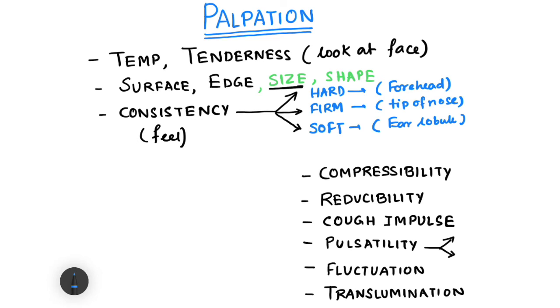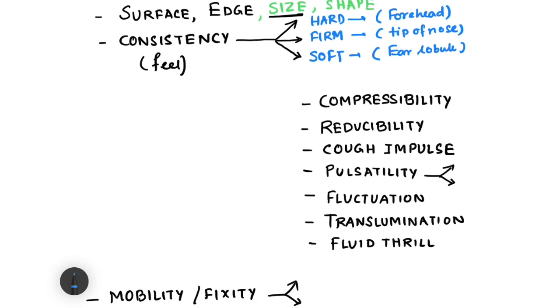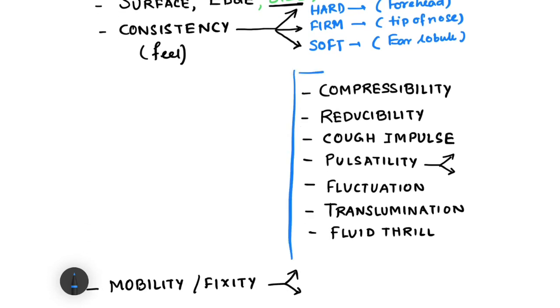Now if your lump is soft, you perform all these tests: compressibility, reducibility, cough impulse. Cough impulse at this time you feel with your hand whether there is any cough impulse or not. Then pulsatility - this can be transmitted pulsatility or expansile pulsatility.